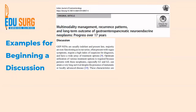For both these examples I can give you some different articles that we have written. This is one article where we had data of 17 years on multimodality management, recurrence patterns, and long-term outcomes of neuroendocrine neoplasm. In this article we have written it as per the first approach — we have given our results first and then gone into the details of the discussion. You can see we have written that the cases are usually indolent, present late, non-functioning in our series, giving results first and then discussing in comparison to other articles.